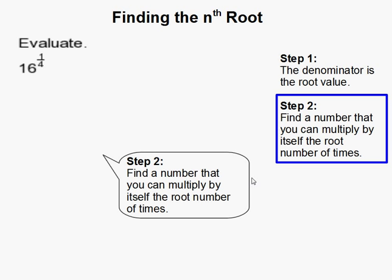So now what we need to do is we need to find a number that you can multiply by itself that root number of times. So we need to find a number that we can multiply by itself 4 times that will give us 16.